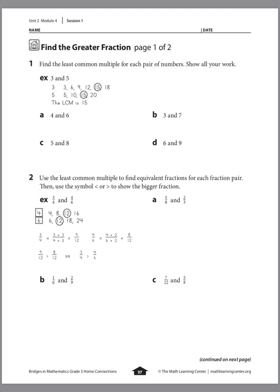Let's try it with 4 and 6. We list out the multiples of 4: 4, 8, 12, 16, 20, 24. Now list the multiples of 6: 6, 12, 18, 24. We'll stop there. Do we see a multiple in common between 4 and 6? Yes, we actually see a couple — 12 and 24. But remember, I'm finding the least common multiple. Which one is least? The answer is 12. So 12 is the least common multiple between 4 and 6.